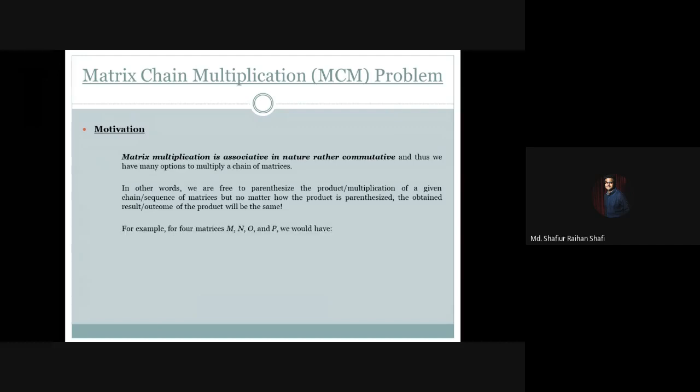Let's see an exact example. Suppose I have 4 matrices M, N, O, P. We can parenthesize the product in different ways, and in each case the final outcome of the multiplication will be the same.